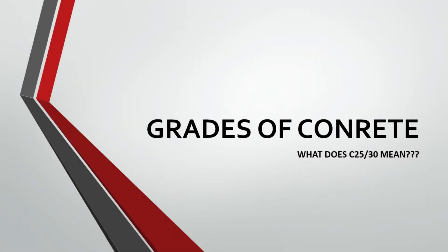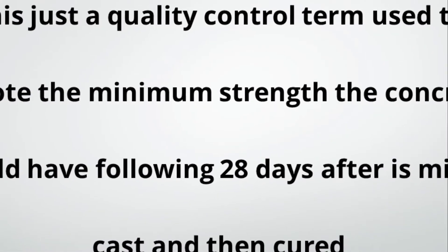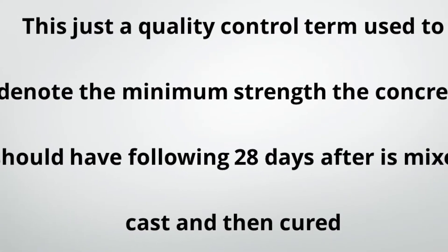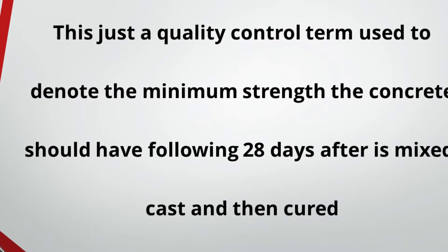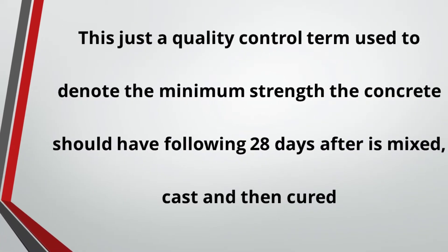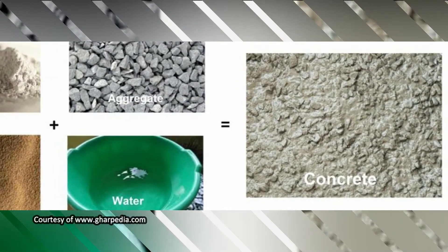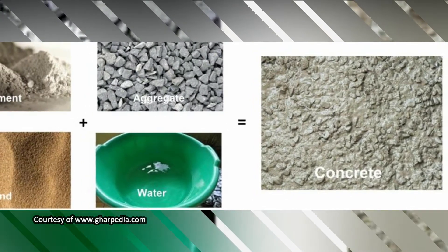First things first — what exactly is meant by the grade of concrete? This is just a quality control term used to denote the minimum strength the concrete should have following 28 days after it is mixed, cast, and cured. This is dependent on the composition of the concrete, meaning the strength is governed by the ratio of cement to sand to aggregates and water.